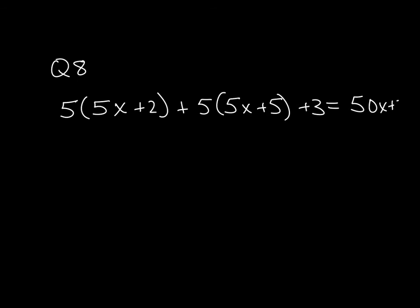The next example we're going to do is something similar, but when we multiply this out, 5 times 5x plus 2 plus 5 times 5x plus 5 plus 3. And if I look at the right-hand side here, that would be 50x plus 39.